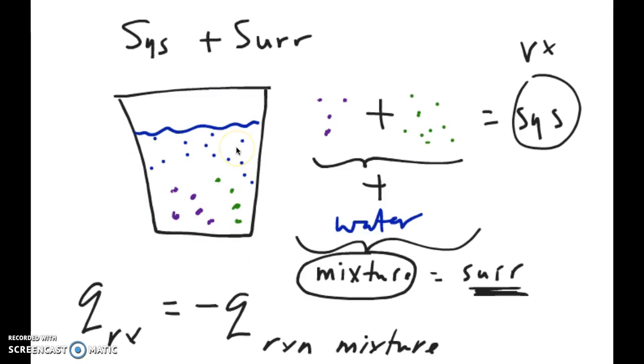But what we're measuring in terms of temperature is actually just the surrounding. So what's happening here is we measure the surrounding, but what we want is the property of the system. And as a result, the Q of the reaction, which is the system, is negative of the Q of the reaction mixture, which is the quantity we measure. So when you do your MC delta T, whatever that number is, the actual Q of the reaction is the negative of that number. All right, keep that in mind. That's really important.